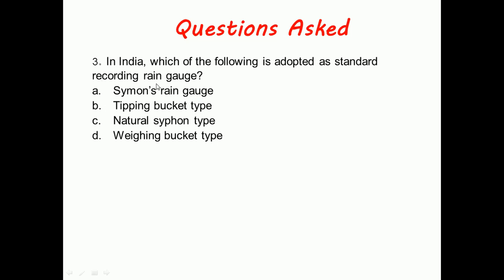We can eliminate option A as Simon's rain gauge is not a recording rain gauge, it is a non-recording rain gauge. Out of the other three options, natural siphon type is the recording rain gauge adopted as standard rain gauge in India.